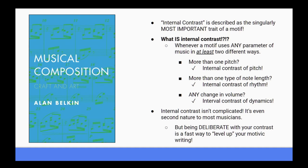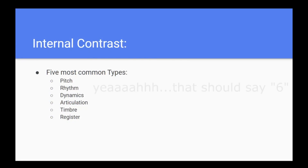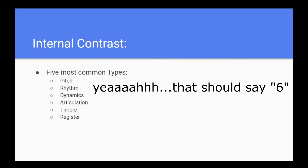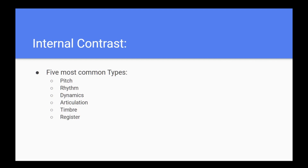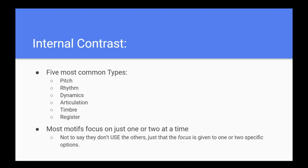So let's figure out just how you can be more deliberate with this process. The five most common types of internal contrast are pitch, rhythm, dynamics, articulation, timbre, and register. Most motifs will focus on manipulating at least two of these parameters. Of the five, pitch and rhythm are by far the most commonly used in most music — after all, these are the two most basic building blocks of melody. But they're not the only ones you can work with.